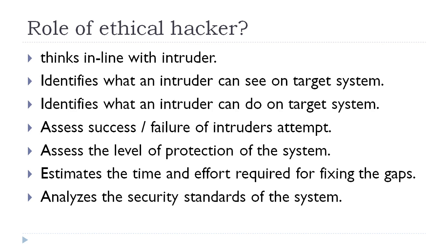The ethical hacker will also try to uncover the tracks — how the hacker entered into the system. The ethical hacker will predict the path via which the intruder entered, then go in reverse of that particular path to identify the exact entry point into the target system. That entry point might have been exposed because of a weak security policy or very poor protection of the application.